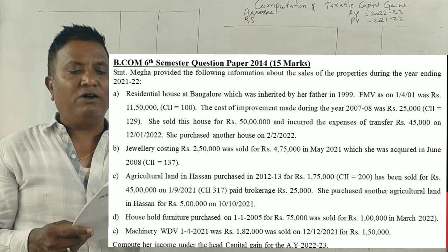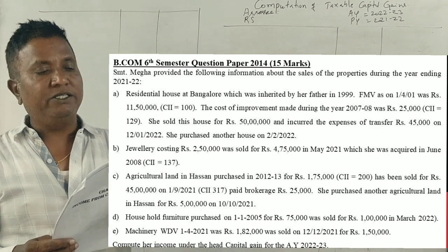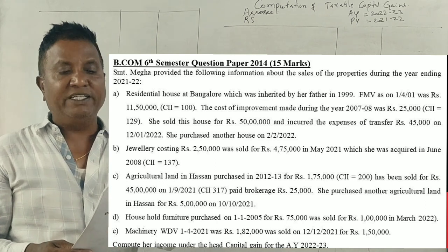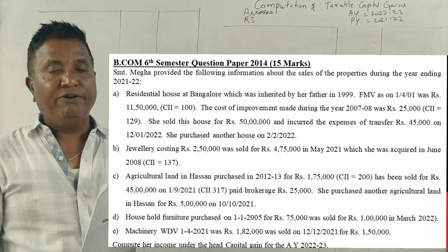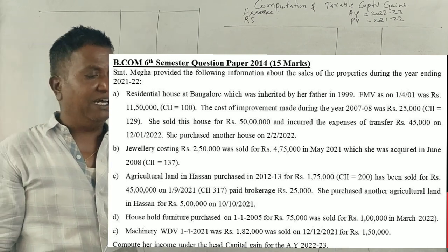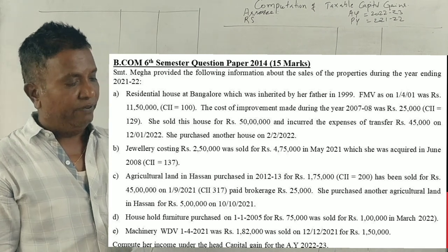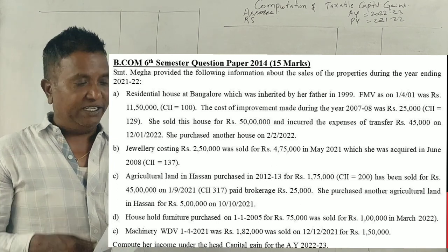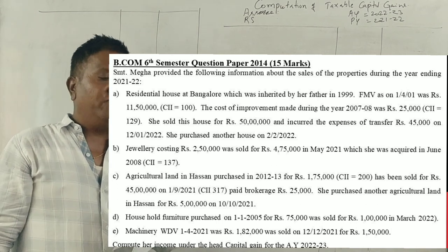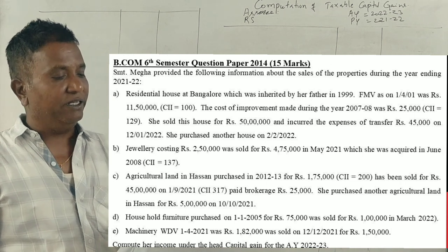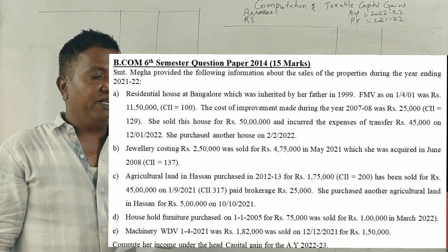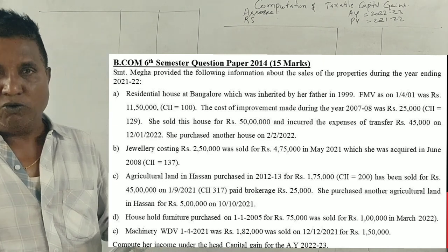Shri Mataji Begha provided the following information about the sale of properties during the year 2021-2022. Residential house in Bangalore which was inherited from her father in 1999, fair market value in 2001 was 11,50,000, cost indexed is 100. Cost of improvement made during 2007-2008 was 25,000, cost index 129. She sold this house for 50 lakhs and incurred expenses of 45,000. She purchased another house on February 2nd, 2022 for 40 lakhs.